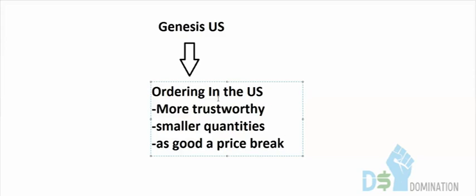Genesis US is for people who have a few hundred dollars and don't want to risk it all going to China right away. You can grab a one or two dollar item from a local US site. If you're international, you can still use these. This is an extension of Genesis Traditional, but focused on US-based suppliers.